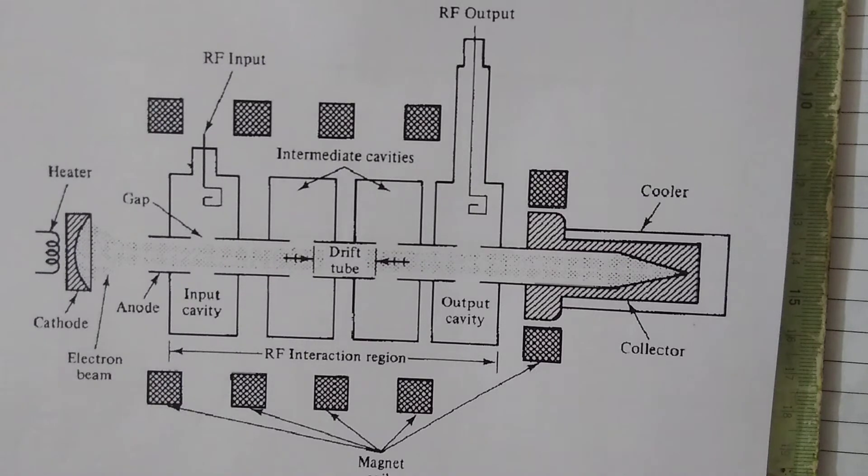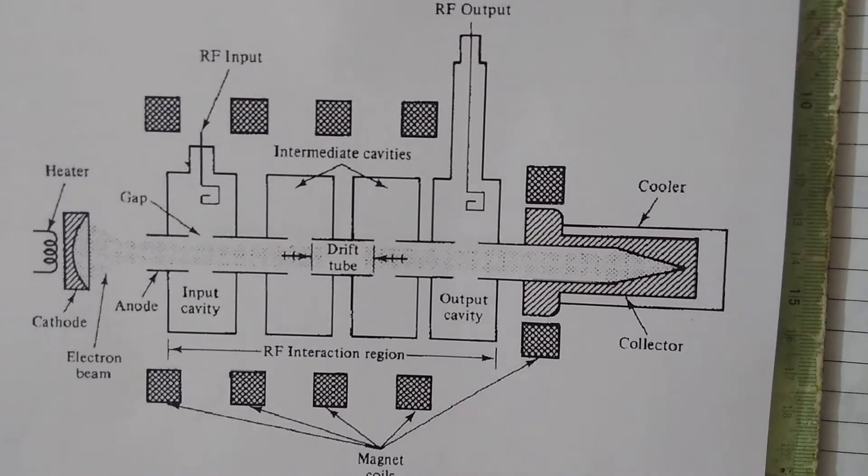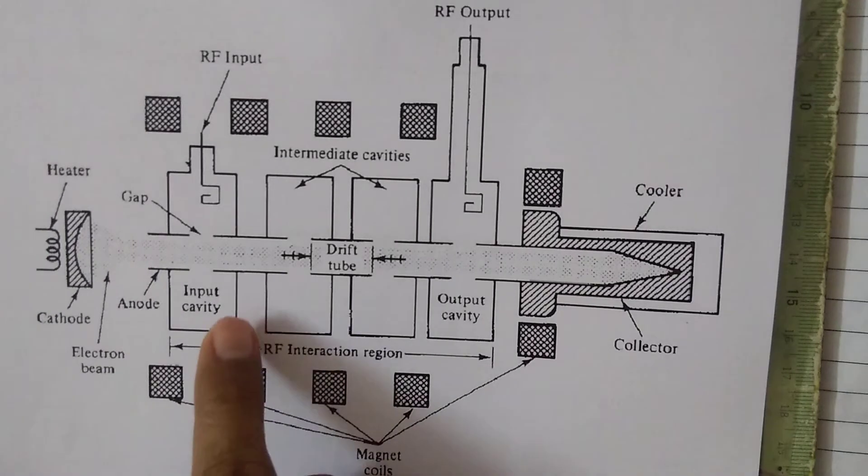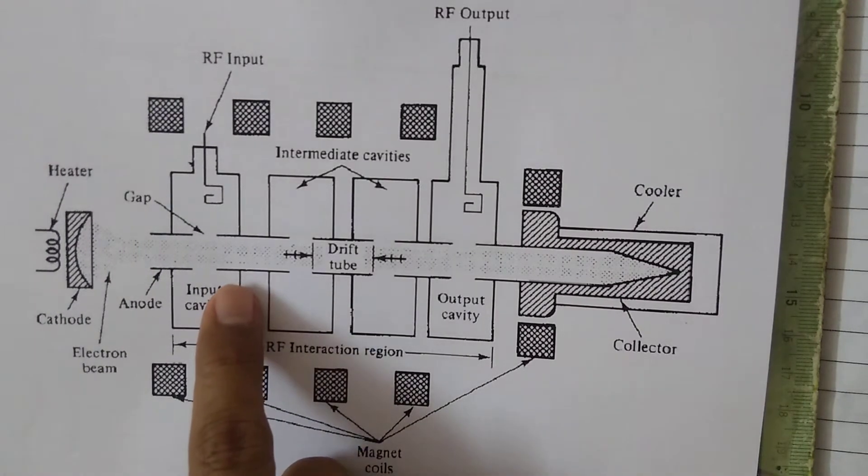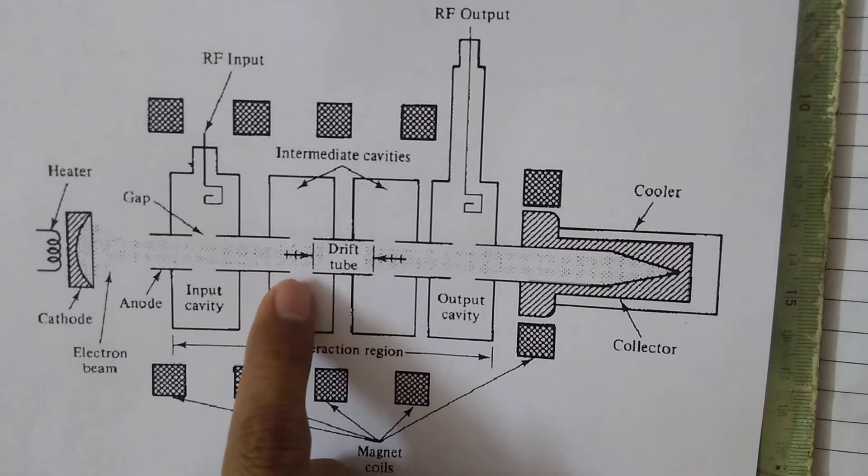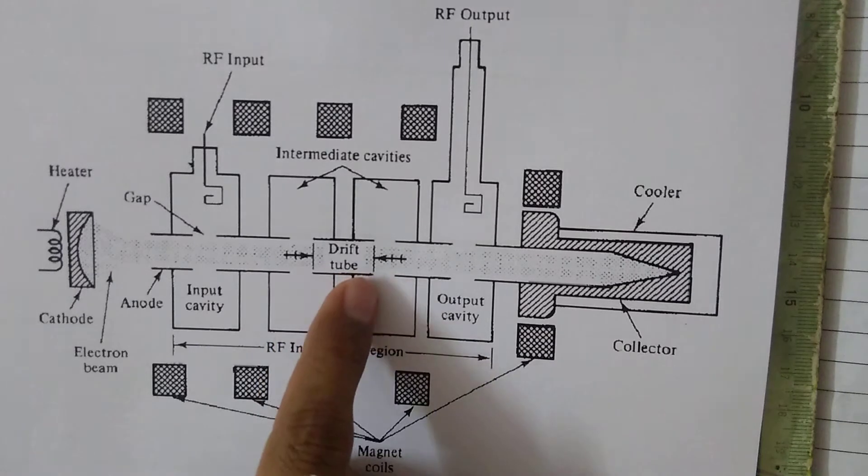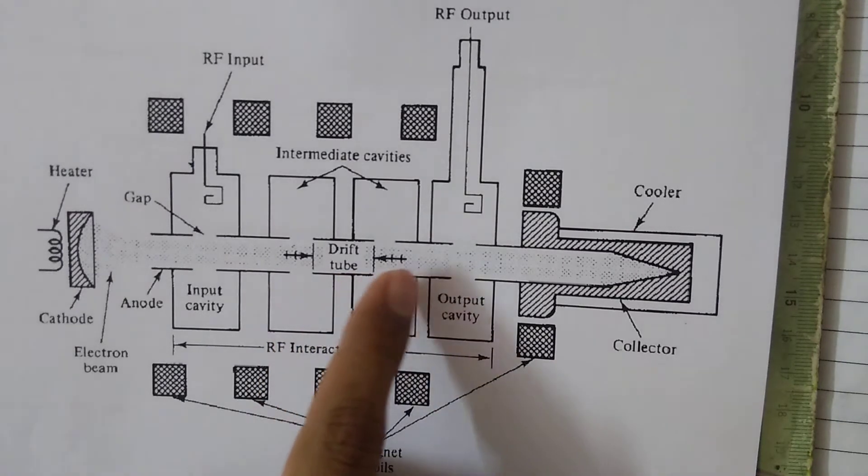The power gain of a two-cavity klystron amplifier is typically about 30 dB. Whenever we require higher overall gain, we can cascade several two-cavity tubes to obtain higher gain. The output of the first cavity acts as input to the second cavity. Similarly, the output of the second cavity acts as input to the third, and so on.